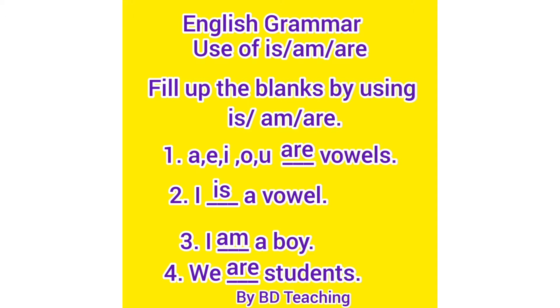For example, number one: a, e, i, o, u — dash — vowels. Are vowels. Number two: I dash a vowel. I is a vowel.